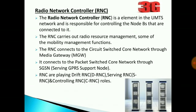Node B is controlled by the RNC. It is connected to the RNC through the Iub interface. Node B contains an RF power amplifier and digital signal processor. The Radio Network Controller (RNC) is the element in the UMTS network responsible for controlling the Node Bs. The RNC carries out radio resource management and mobility management functions. The RNC connects to the circuit switched network through the media gateway, and to the packet switched network through the Serving GPRS Support Node. RNCs play drift RNC, serving RNC, and controlling RNC roles.